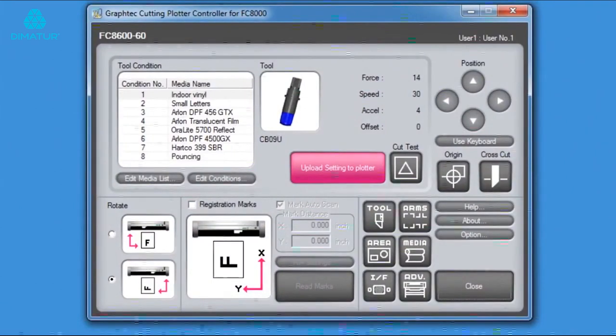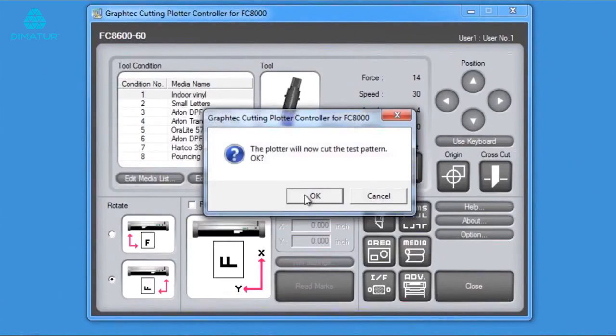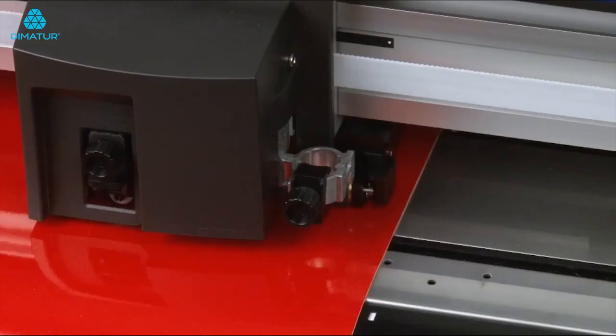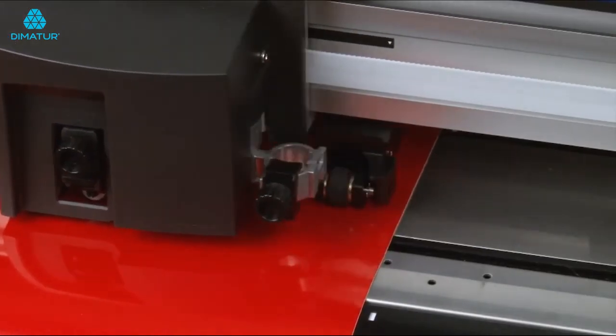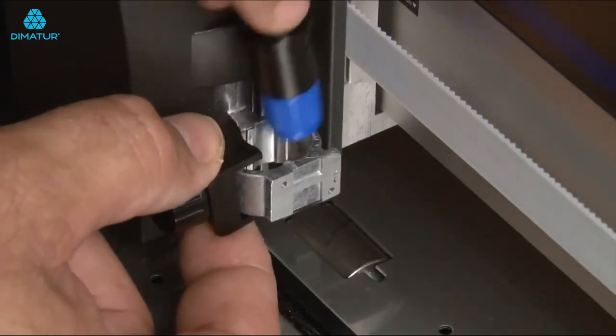When the plotter controller window opens, click the Test Cut button, and then click OK. At this point, the tool head should be moving as if it were cutting. If you do get movement, then go ahead and mount the blade holder tool.